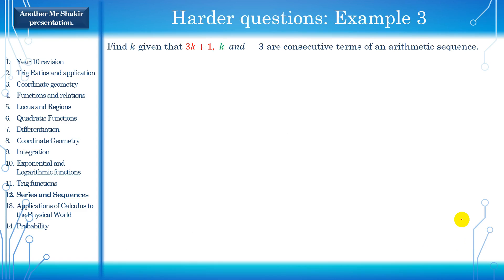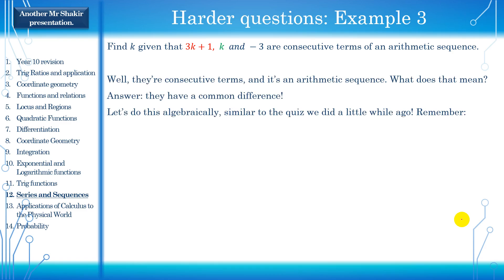Find k, given that 3k plus 1, k, and negative 3 are consecutive terms of an arithmetic sequence. Well, we have three terms, and we know they're consecutive terms, and we know it's an arithmetic sequence. And we have to find k. Well, the common difference between them has to be the same. Let's use a common difference formula here. Let's do it algebraically, similar to the quiz we did a little while ago, in lesson 3, I believe, last lesson.